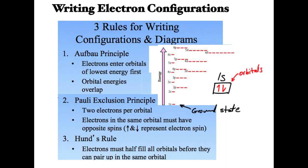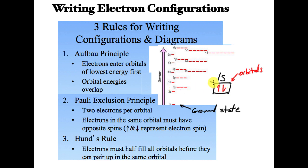This lesson is going to focus on electron configurations. Really all we're going to do is take our orbital diagrams from the previous lesson and simplify them, because as you've probably seen, it can get a little tedious to draw the boxes and arrows. Orbital diagrams are great because they show us how electrons are arranged — how many paired, how many unpaired — but what we really want to do is simplify this. We're going to drop out the boxes and the arrows.